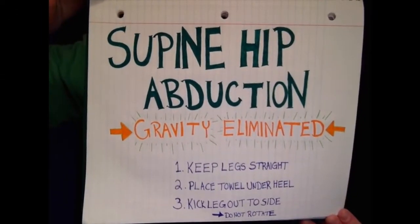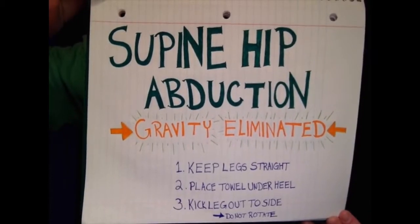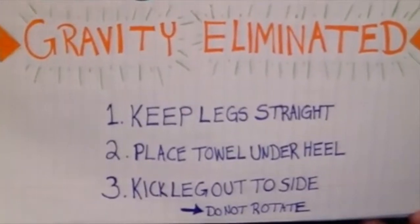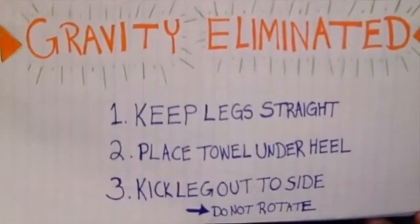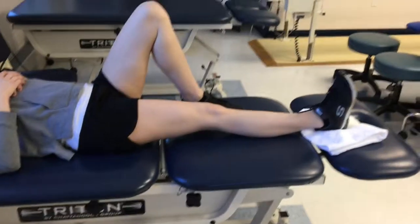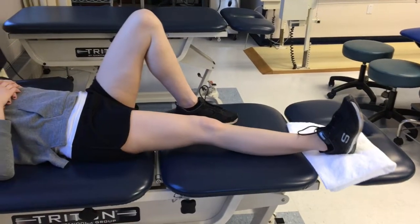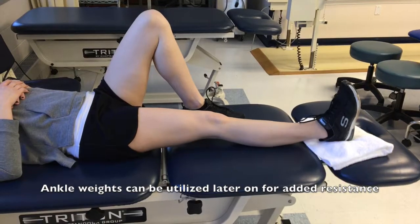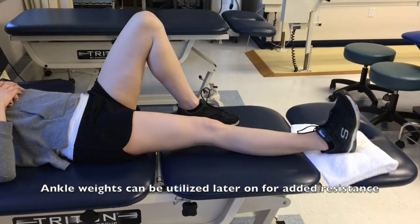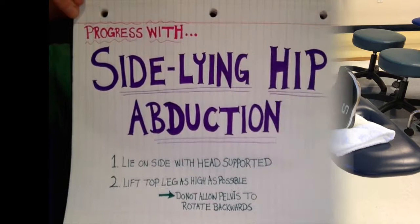Supine hip abduction is a good exercise for patients with 2 out of 5 strength, as gravity will be eliminated in this position. Patients will lie supine with one or both legs straight. The patient will slide or kick one leg outward into abduction, being sure not to rotate the leg or hike the hip for compensation.